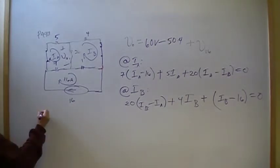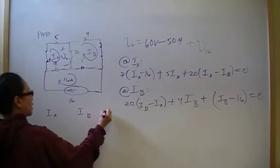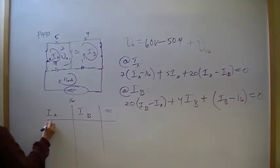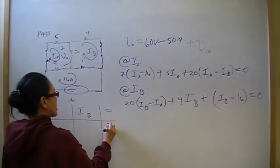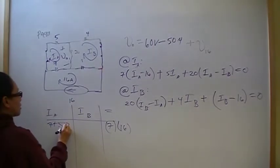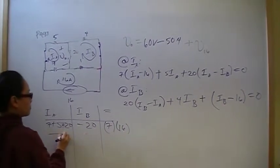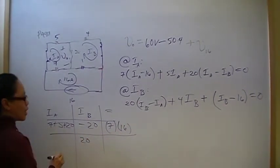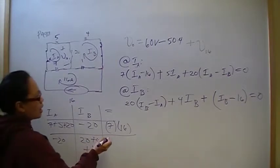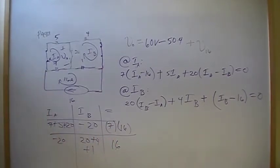Now, we're going to build our matrix, the Ia, Ib, and constants. So, in the first equation, we've got 7 for Ia, and then on this side, this is 7 times 16. It's going to come on the other side as a positive. And then, we've got plus 5 for Ia plus 20 for Ia and minus 20 for Ib. Next, we have negative 20 for Ia plus 4 for Ib plus 1 for Ib, and then the negative 16 will come on this side as a positive 16. So now, we're going to enter this matrix into our simultaneous equation solver.